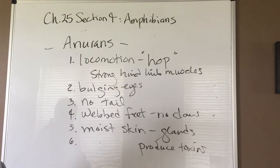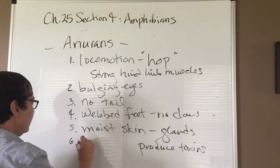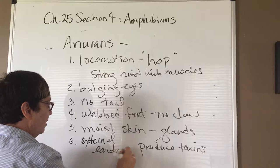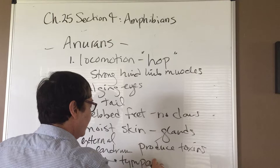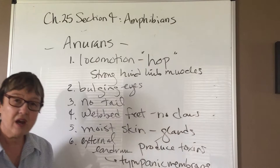Another feature seen during frog dissections: they have an external eardrum, technically called the tympanic membrane. Our own tympanic membrane is deeper within the ear, whereas in frogs it is visible on the surface.